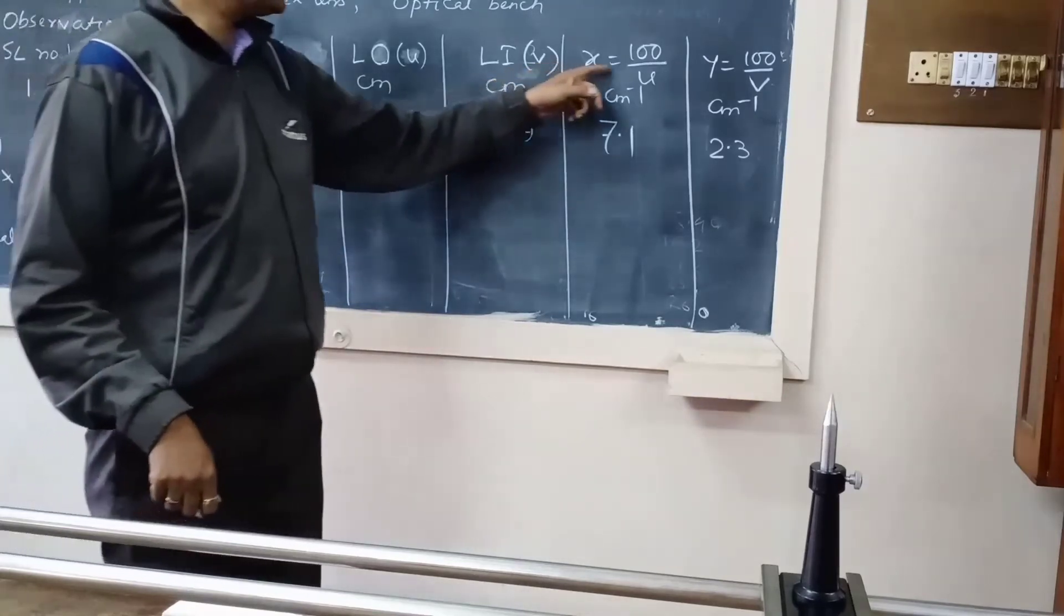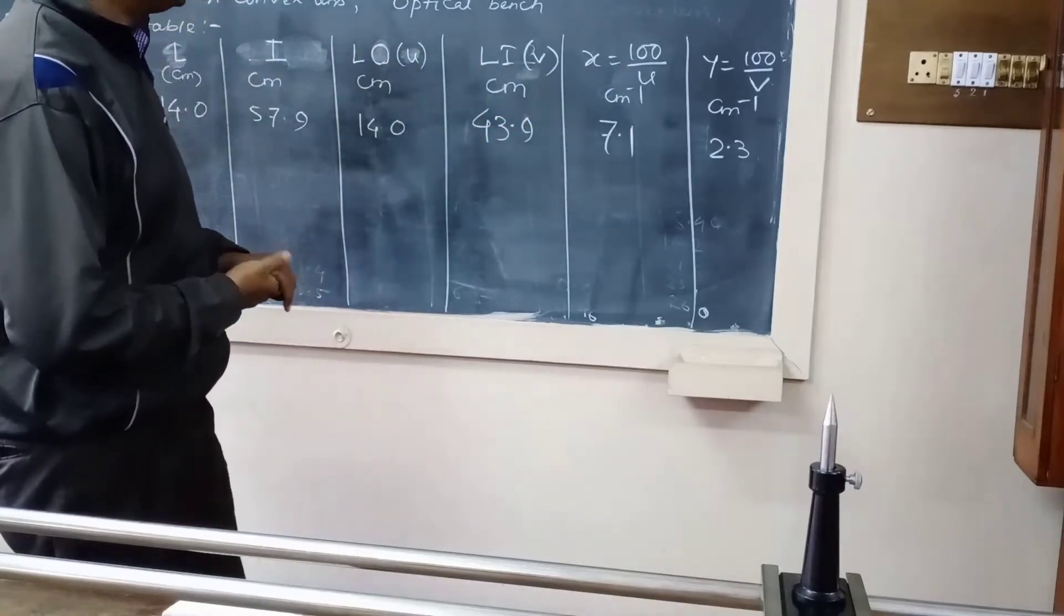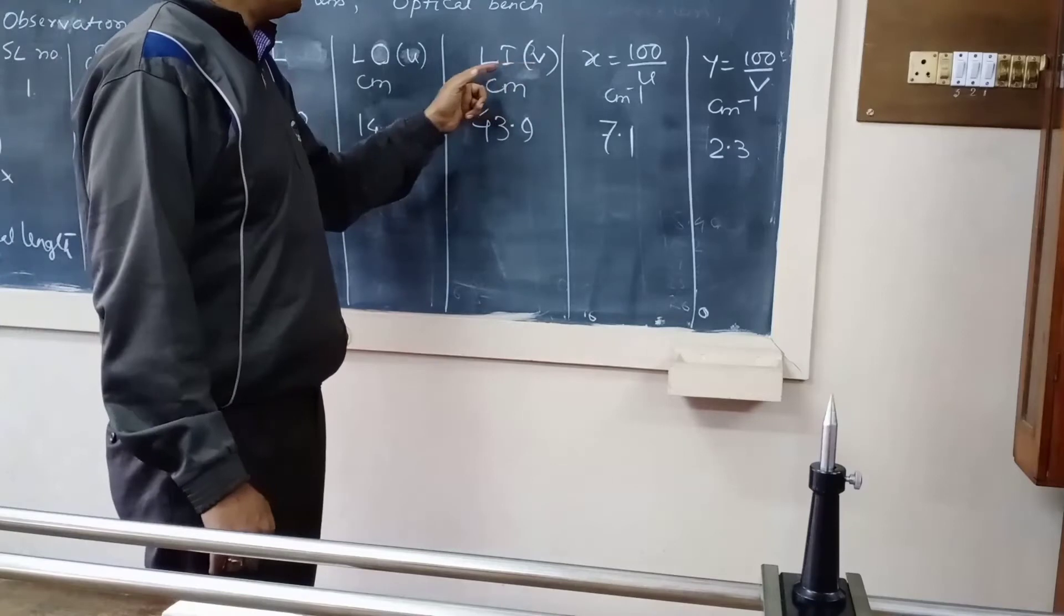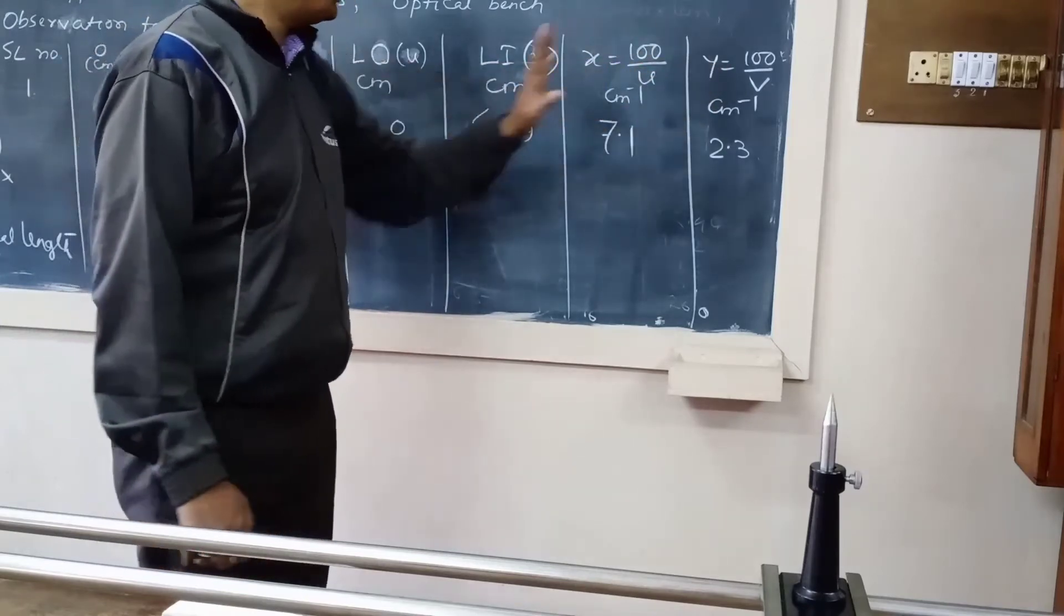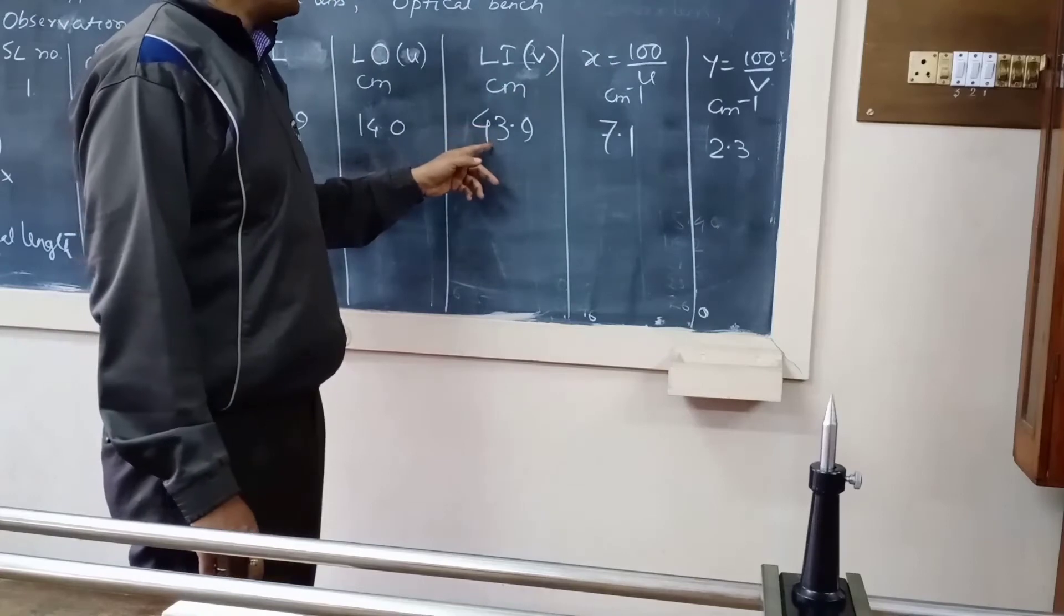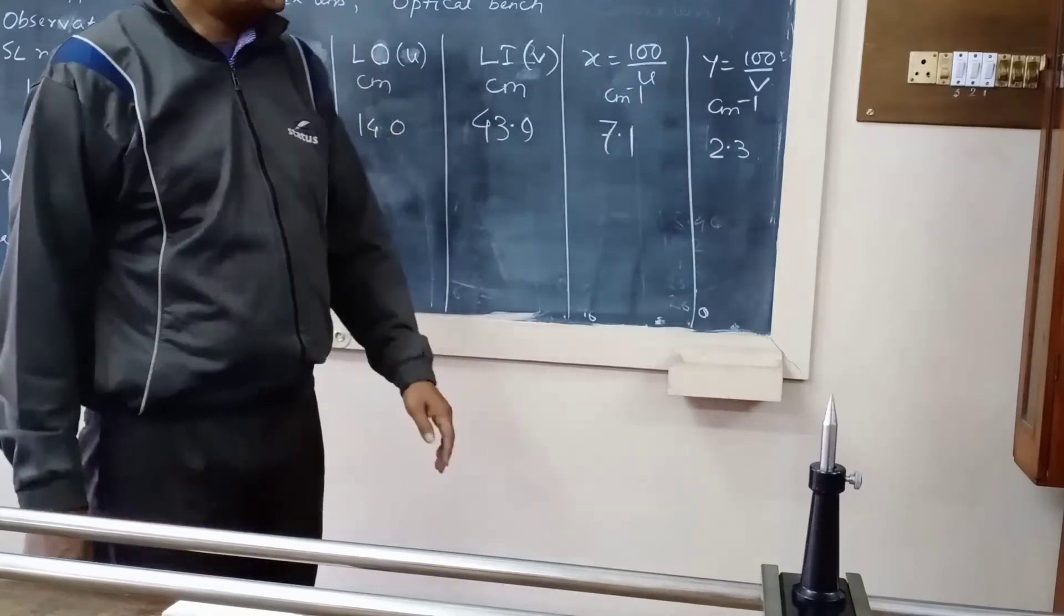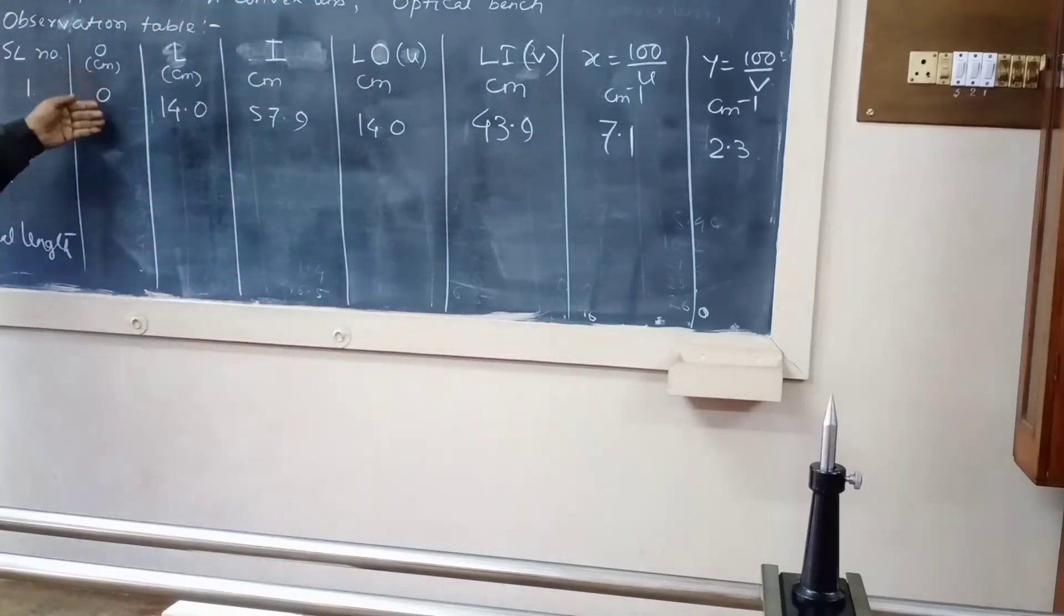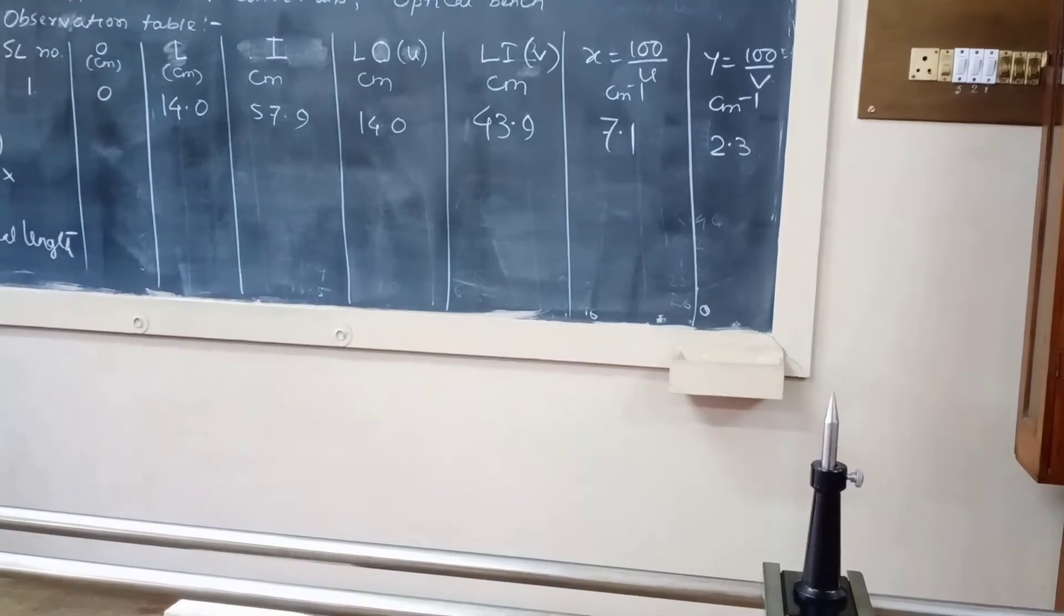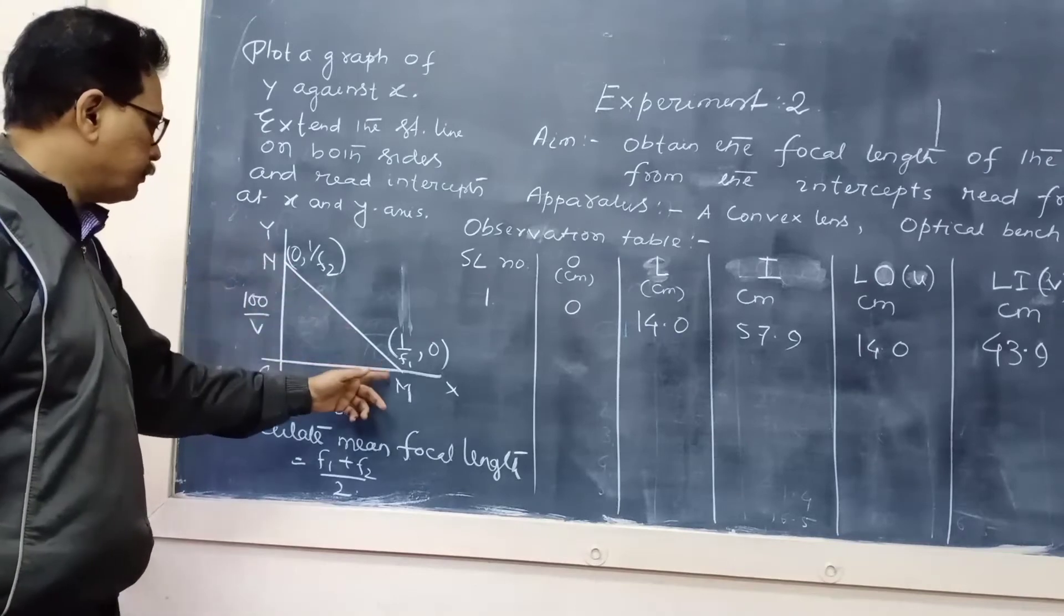Now x is 100 by U means 100 by 14, if you do it is 7.1 cm to the power minus 1. This way we are going to take 5 observations and after that, we have to plot a graph of y versus x.